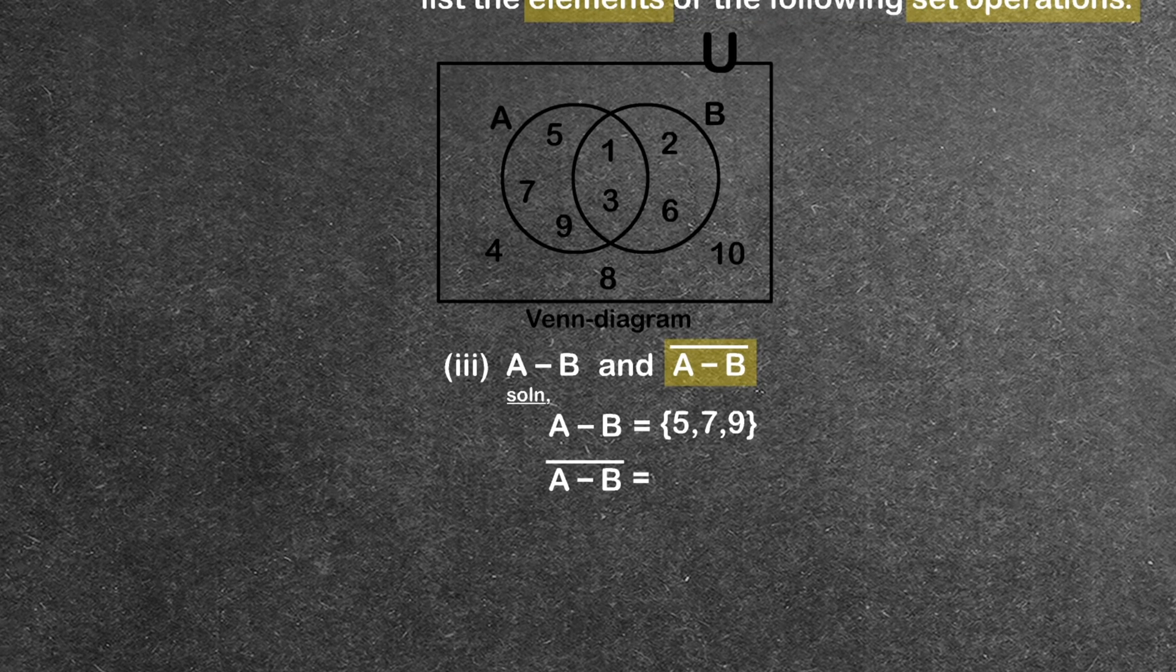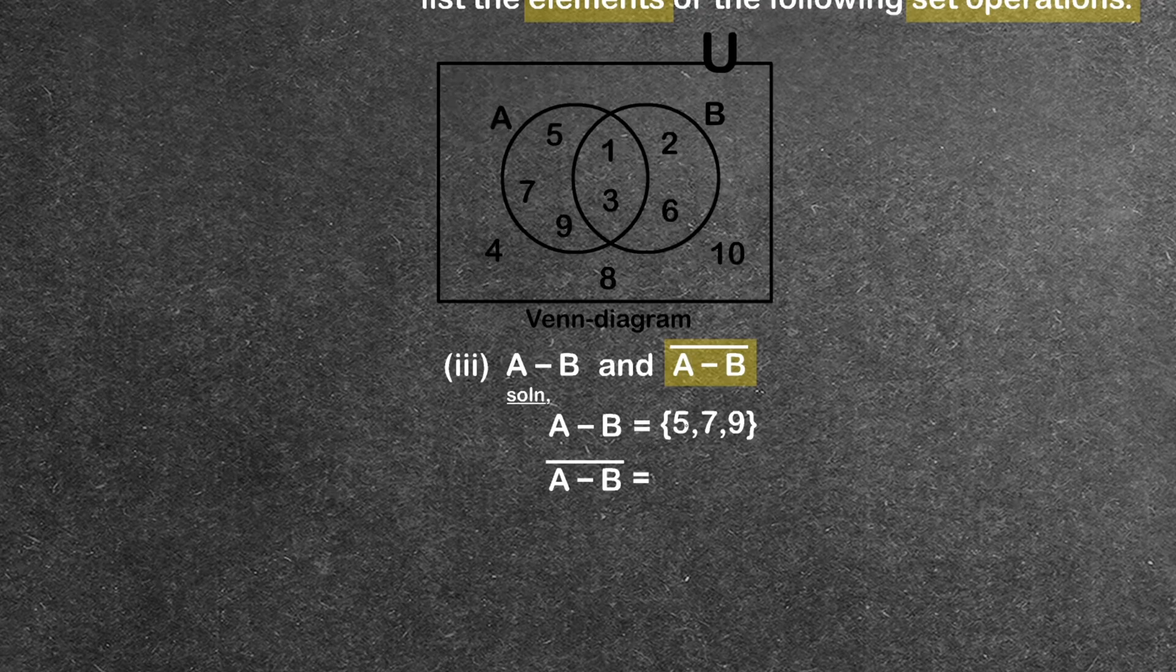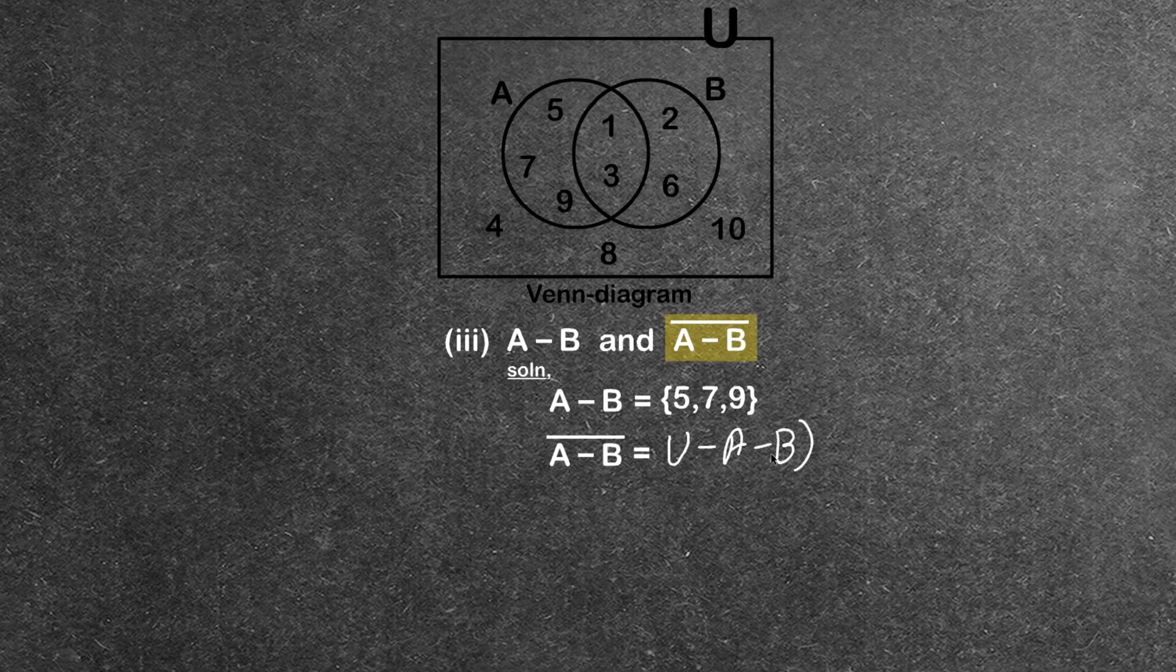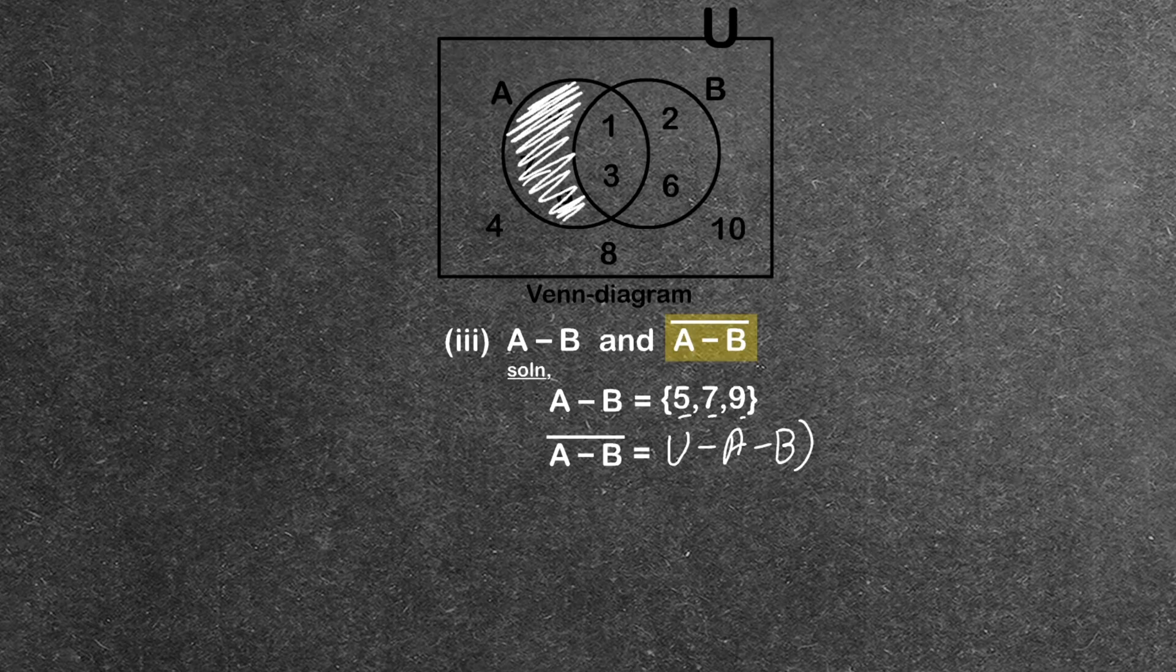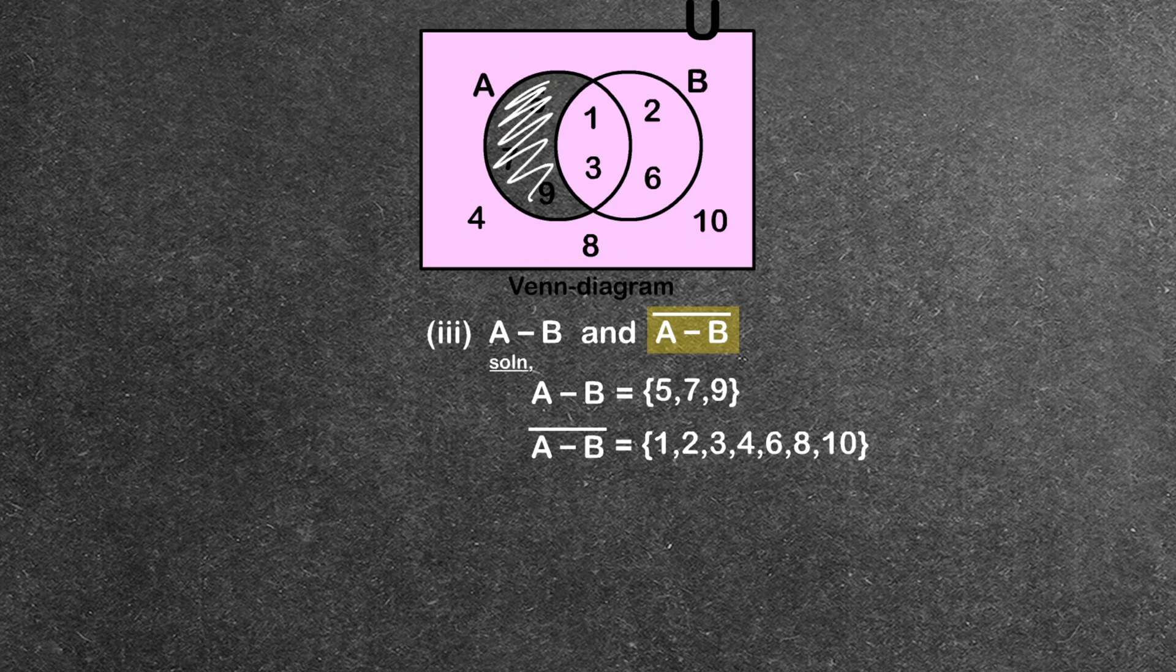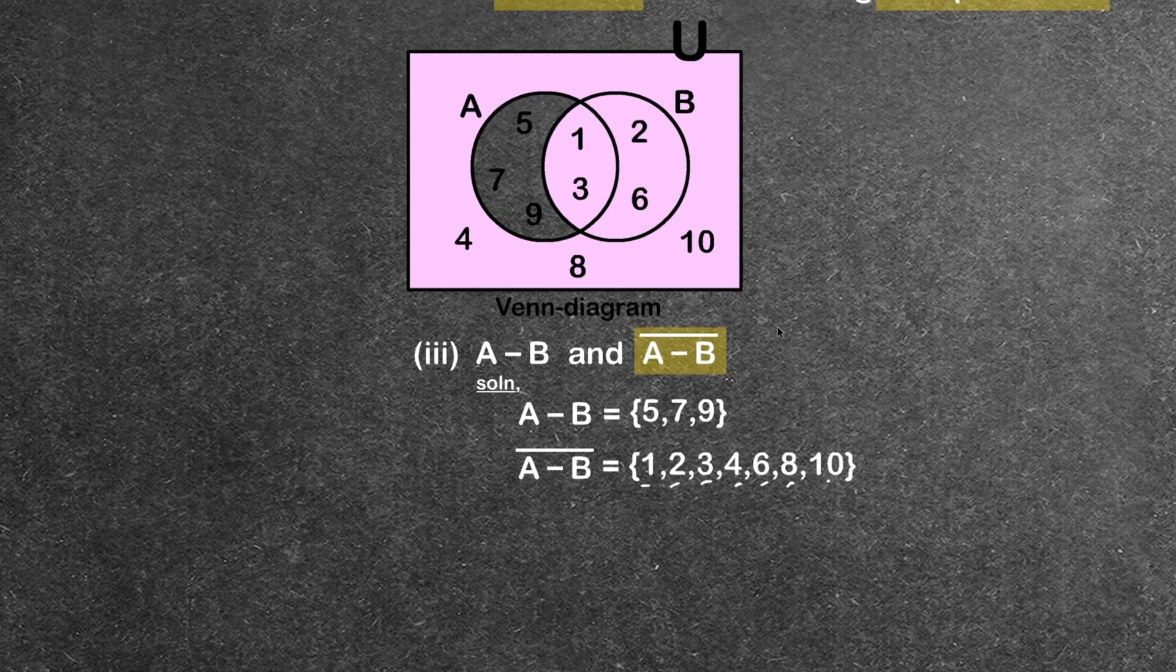Now for (A−B)', the complement of A minus B. This is the universe minus A minus B. Since A minus B contains {5, 7, 9}, the complement includes all other elements from the universe: 1, 2, 3, 4, 6, 8, 10.